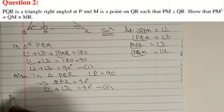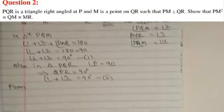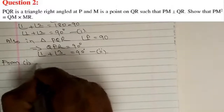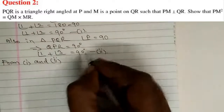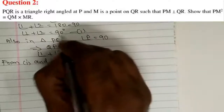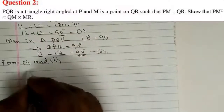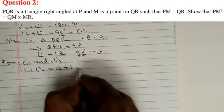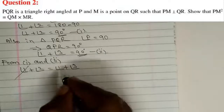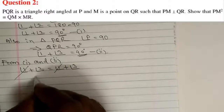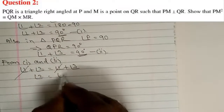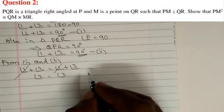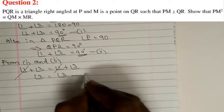From Equation 1 and Equation 2, both right-hand sides are equal to 90°, so the left-hand sides can be equated: angle 1 plus angle 2 equals angle 1 plus angle 3. Cancelling angle 1 from both sides gives angle 2 equals angle 3. We call this Equation 3.